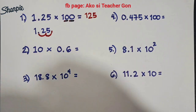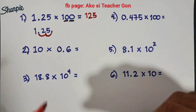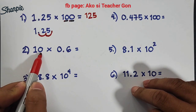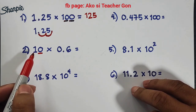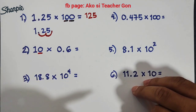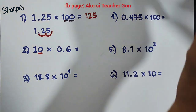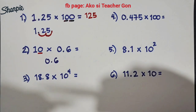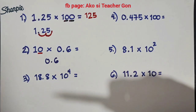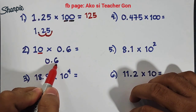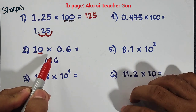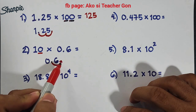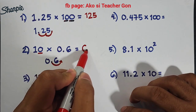For number 2, we are given 10 times 0.6. As you can see, we have 1 zero here. We need to move the decimal place from left to right based on the number of zeros — we have 1. Therefore, the correct answer is simply 6.